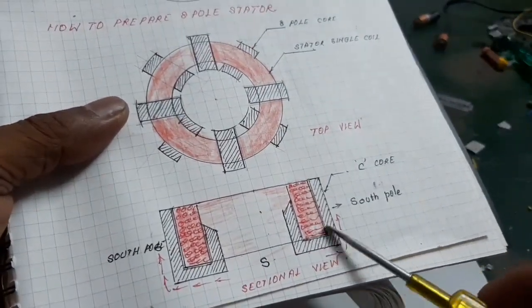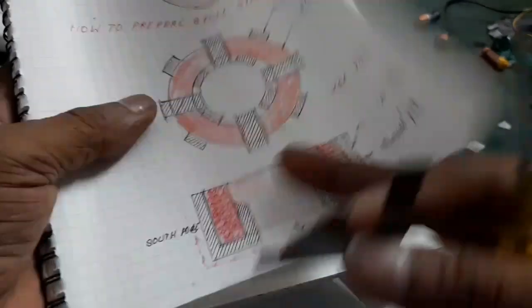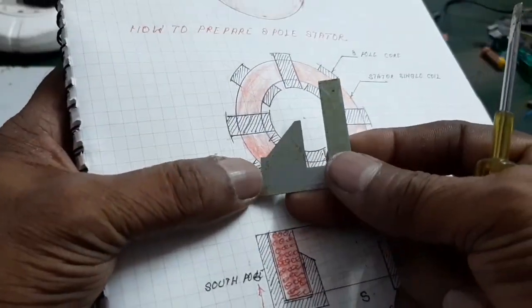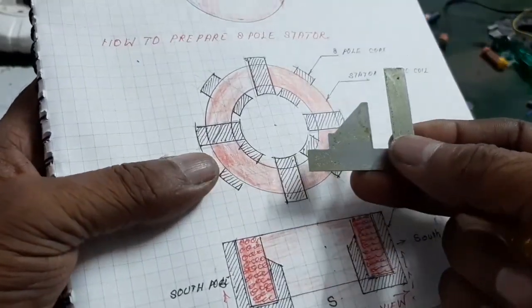A C-core, that is, this is the transformer core. I just removed the portion and it looks like a C-core.